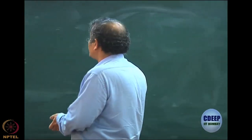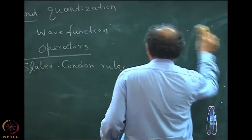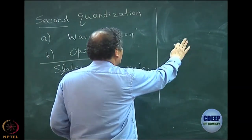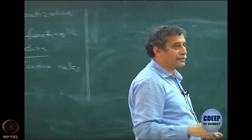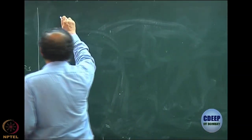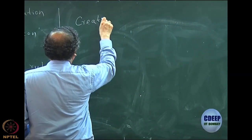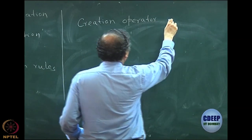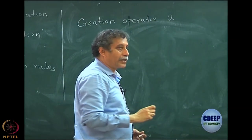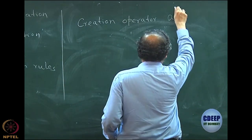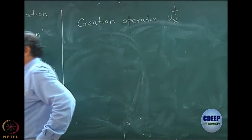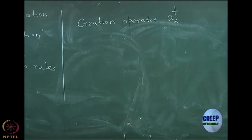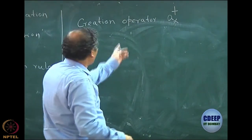We will start with the second quantization and define two very important basic operators. One of them is called the creation operator, written as a†_α — a subscript alpha with a superscript dagger. That is called the creation operator.